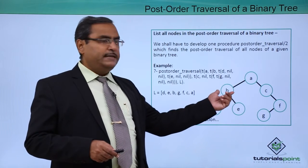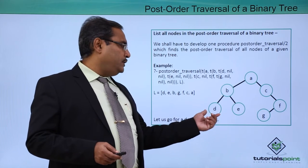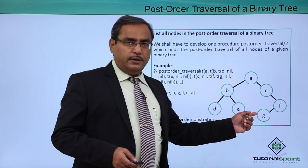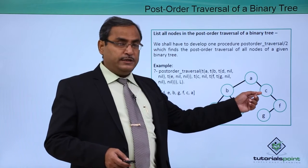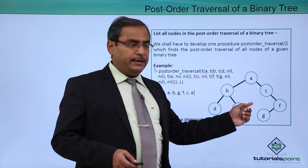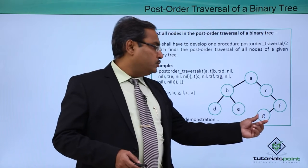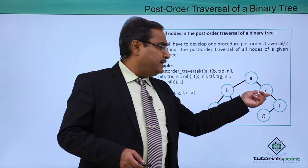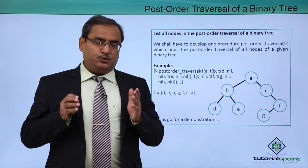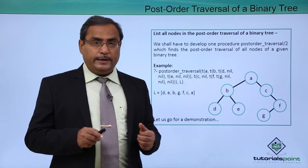In the left subtree, B is the root, so root will come at the last: D, E, B. Then in the right subtree, I cannot start with C because C is the root here. The left subtree is void, so I go to the right subtree. So G, F, C — and at last A will come. That is the respective postorder traversal of this binary tree.